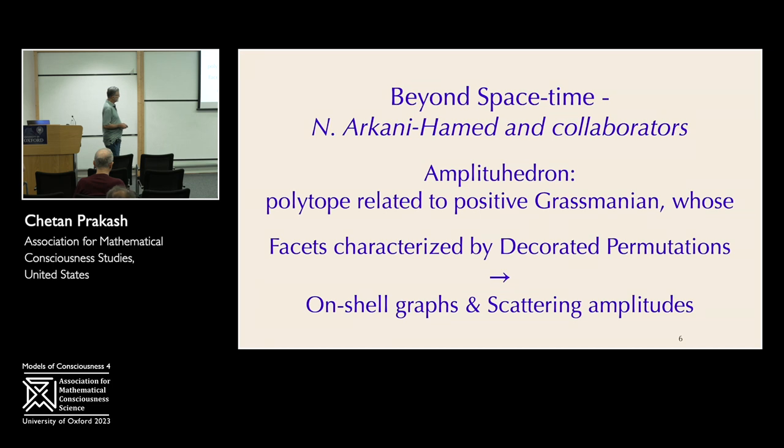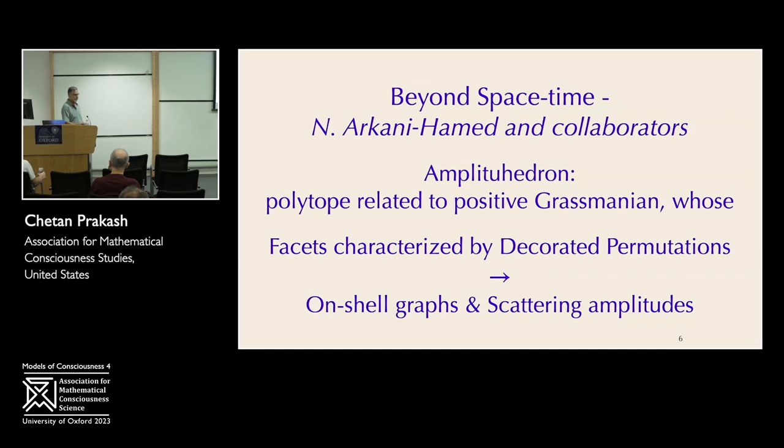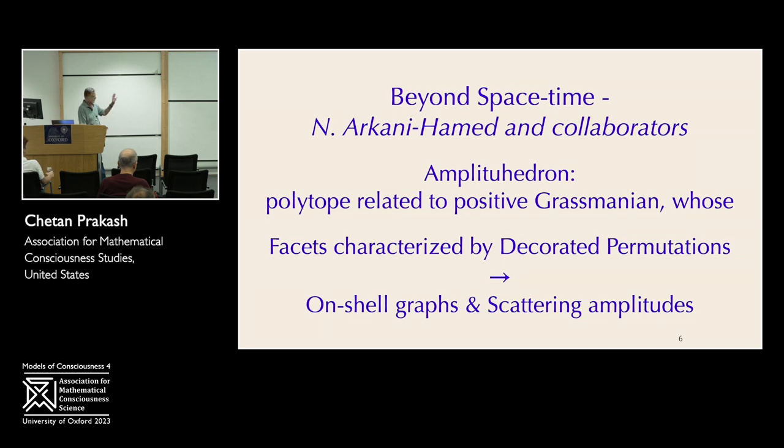The amplituhedron is a polytope, a static structure in some abstract space, and its facets, the faces of this polytope, are characterized by decorated permutations. And in some cases, those faces and the decorated permutations give rise to decorated permutations that are related to what are called on-shell graphs in physics. And the scattering amplitudes that have been experimentally discovered with certain scattering of elementary particles are described exactly by this structure.